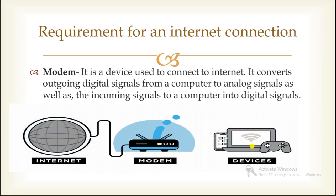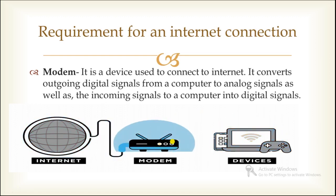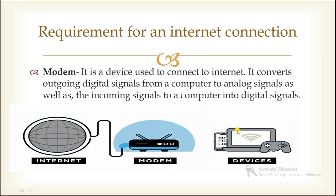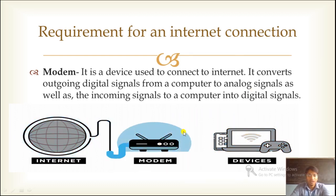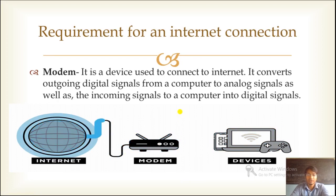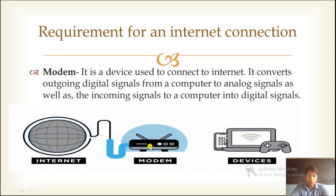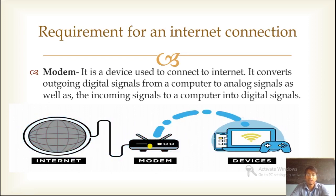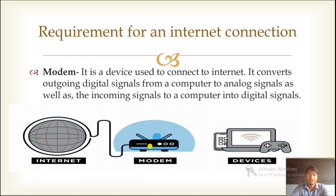The signal which modem sends to the devices is digital signal — digital information. The main question is: why is modem changing analog signal into digital signal? Because digital signal or digital information we can understand, that's why modem converts analog signal into digital signal. The same concept applies when we send information to other devices — it is digital signal, but modem converts that digital signal into analog signal, which is then converted again at the destination system.